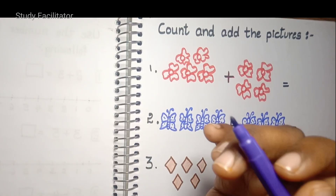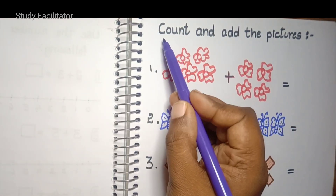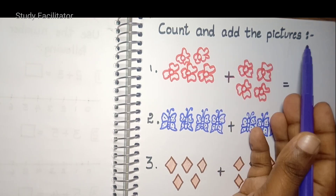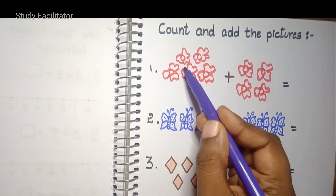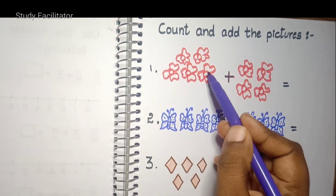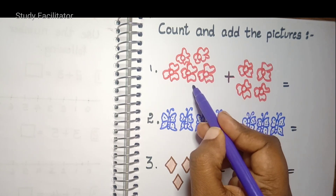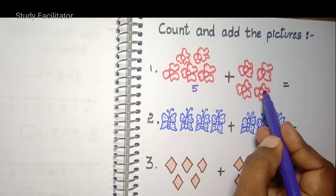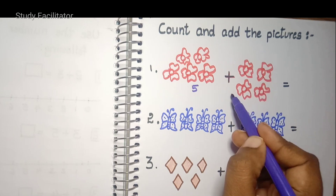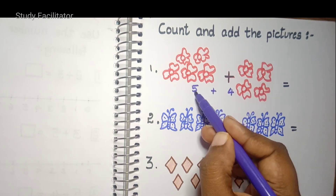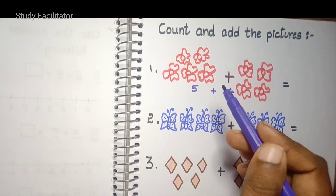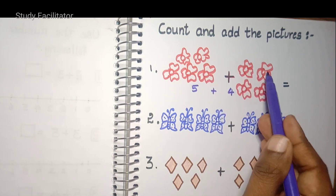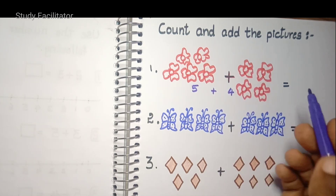Let us see another worksheet: count and add the pictures. One, two, three, four, five — five flowers. One, two, three, four — four flowers. We add both sides: one, two, three, four, five, six, seven, eight, nine — nine flowers in this picture.